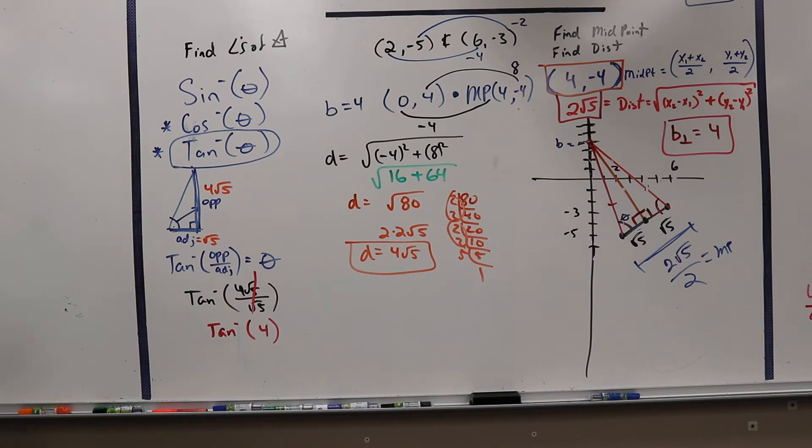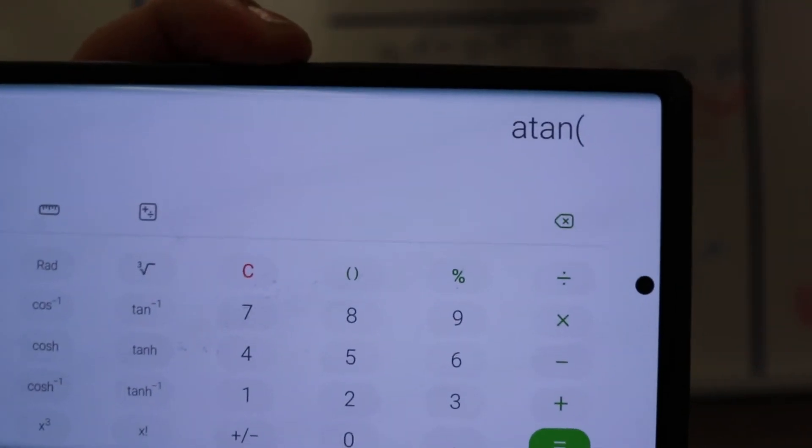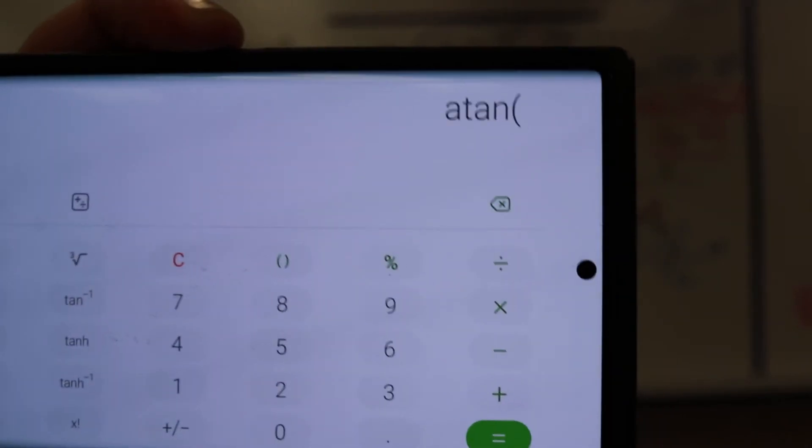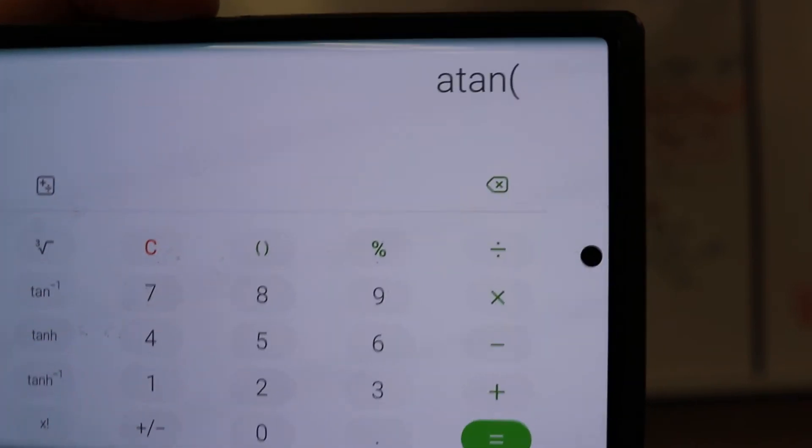Alright, so tangent inverse means I have to change this to inverses. And I got a tangent. So if you notice, this is on the calculator, it'll say, let me try to get that. Oh, it's still not coming up. It'll say A tan, right?